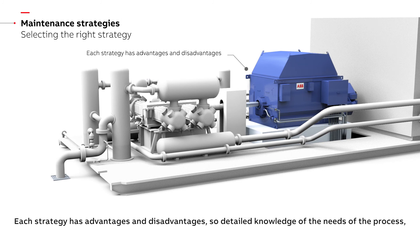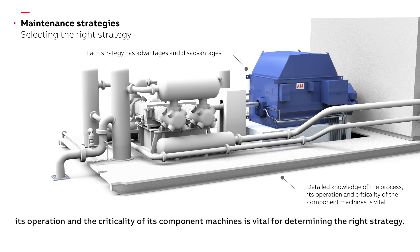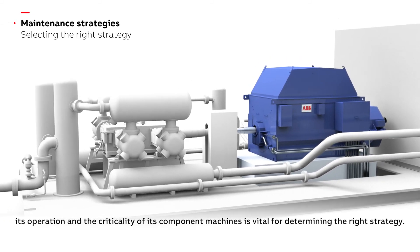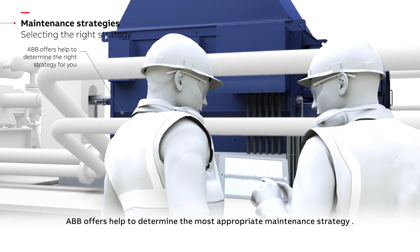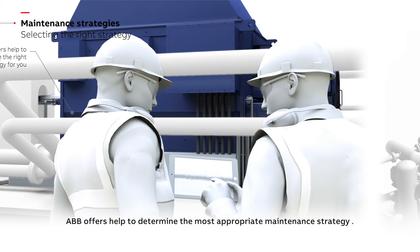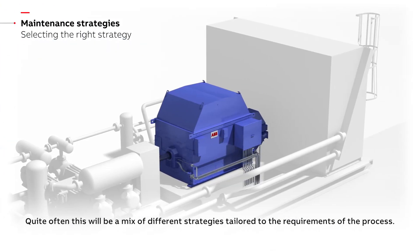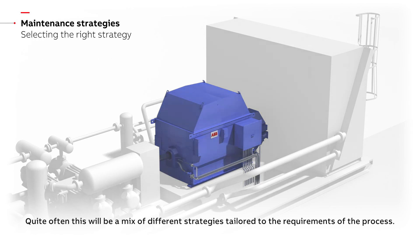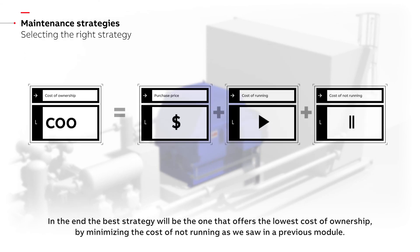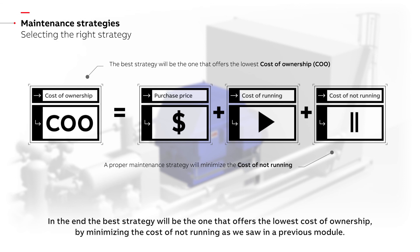Each strategy has advantages and disadvantages, so detailed knowledge of the needs of the process, its operation and the criticality of its component machines is vital for determining the right strategy. ABB offers help to determine the most appropriate maintenance strategy. Quite often this will be a mix of different strategies tailored to the requirements of the process. In the end, the best strategy will be the one that offers the lowest cost of ownership, by minimizing the cost of not running as we saw in a previous module.